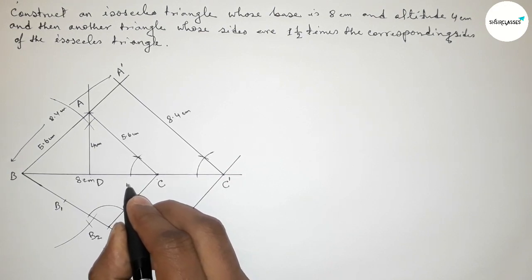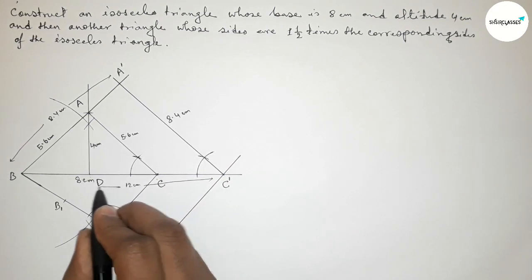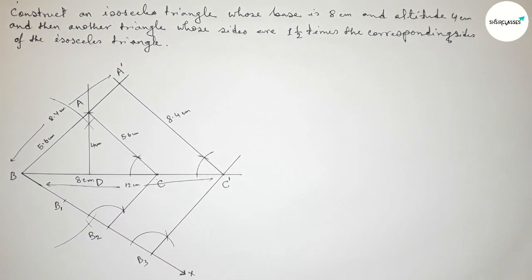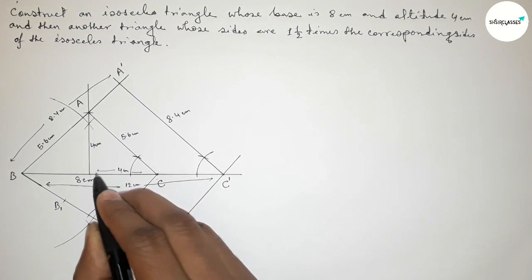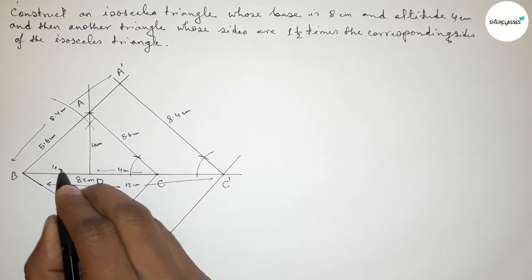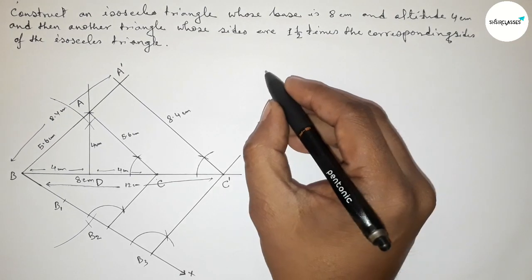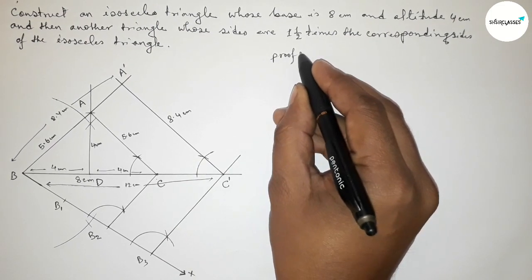BC' equals 12 centimeters. This length is 4 centimeters and this length is also 4 centimeters, because this bisects the line BC. Next we have to prove this.